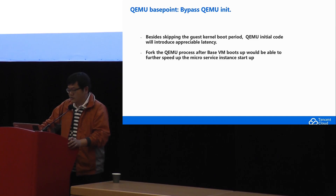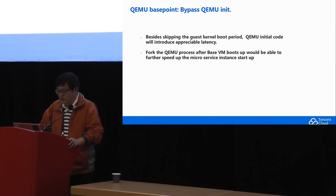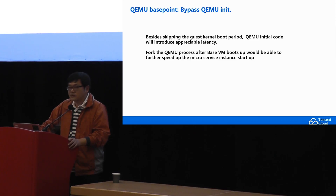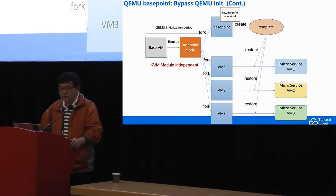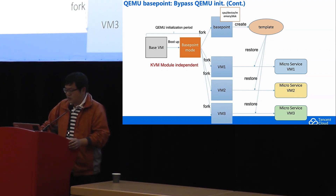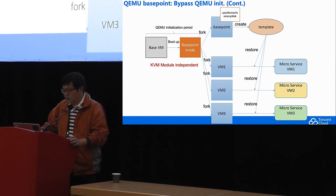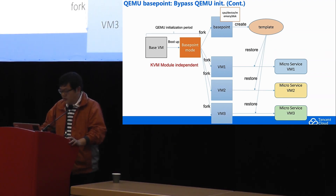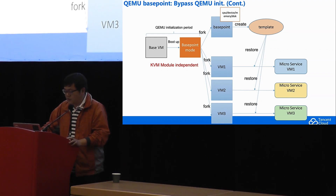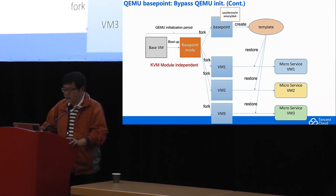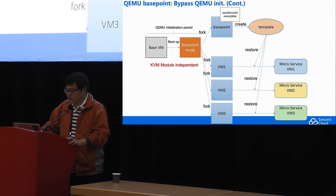So in this second stage, we are trying to eliminate the initialization cost by using fork to further speed up the service instance startup. The implementation is quite straightforward. As you can see in this picture, on the top left you will see the base VM — probably we can call it VM zero. After booting up, it will reach base point mode, which will finish most of the QEMU initialization, but not all related work. Still some interaction with the kernel KVM module needs to be done after fork. After finishing all the initialization, the base point VM is ready for use. We will create the template from it, which will be used for other VMs to restore from.